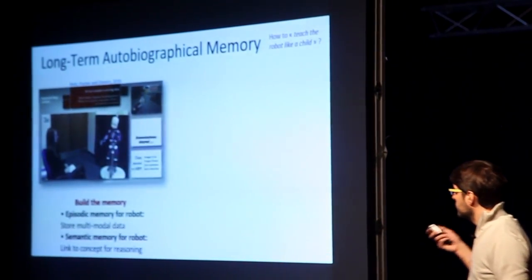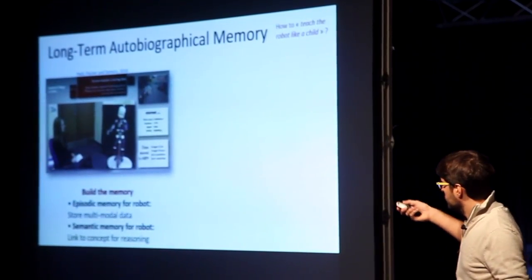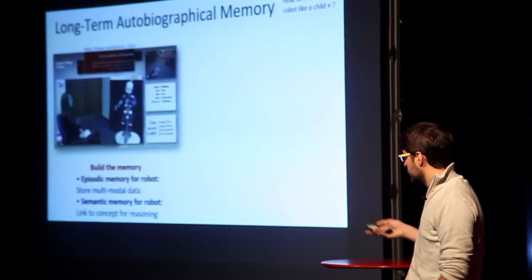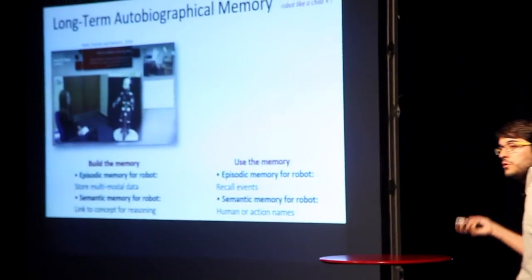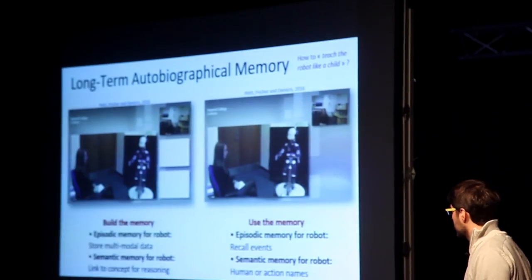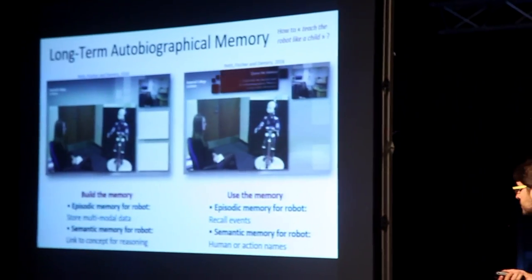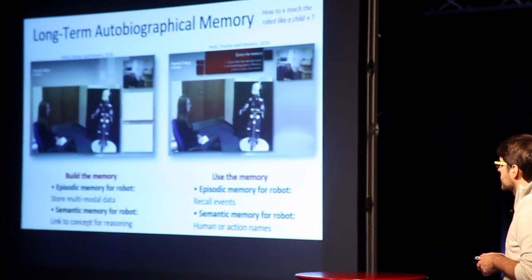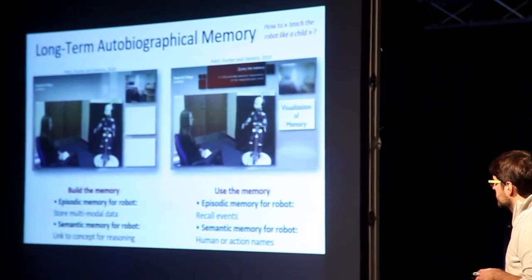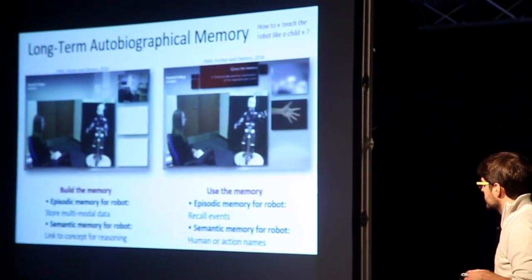Here you can see the robot doing movement and storing data inside the database. It can store different multimodal data from the camera and other sensors. We are then able to recall a specific event — for example: 'Do you remember the last time Yanjing showed you motor babbling?' — and the robot replies: 'Yes, it was one month ago. To be precise, it was on January 26th. I remember — I am visualizing it right now.'